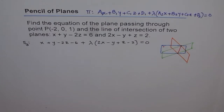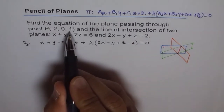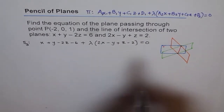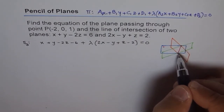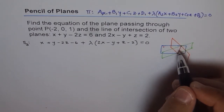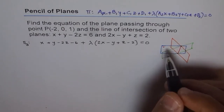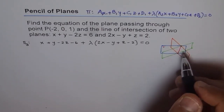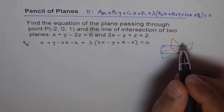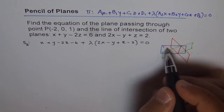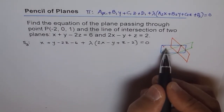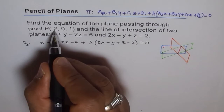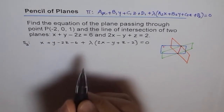Since this plane also contains the point (−2, 0, 1), we plug it in to find the value of lambda. There could be many planes going through this line — that is why it is called a pencil of planes, like pages of a book bound at the spine. Only one of them will uniquely have the given point on it, so we plug in that point and find lambda.